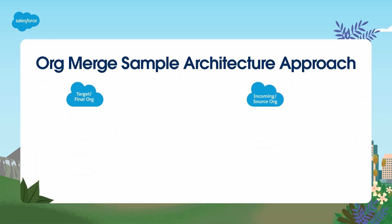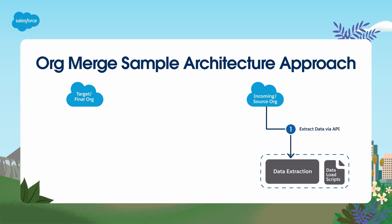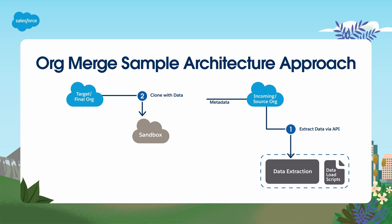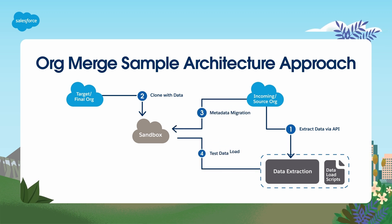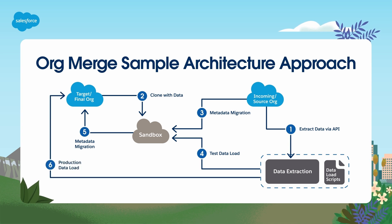Here's an example architecture approach for an org merge. First, extract the data from org2 and develop data transformation and data load scripts — it's recommended to script the process, as several tests may be needed before production load. Second, create a sandbox from org1 to test merging. Third, migrate the metadata from org2 to the org1 sandbox. Fourth, test the data load into the org1 sandbox. Fifth, migrate the metadata from org1 to org1 production. Finally, migrate the data to org1 production.